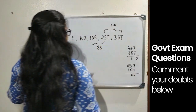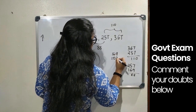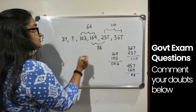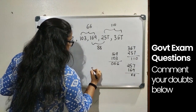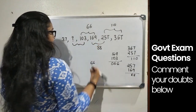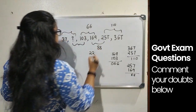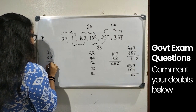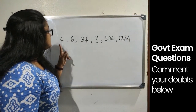The difference between 169 and 103 is 66. We can now see a pattern forming: the differences are 110, 88, 66 — decreasing by 22. So the next difference should be 44, and before that 22. Therefore, the second term is 37 plus 22, which equals 59.